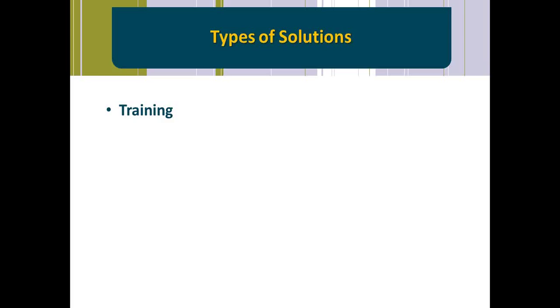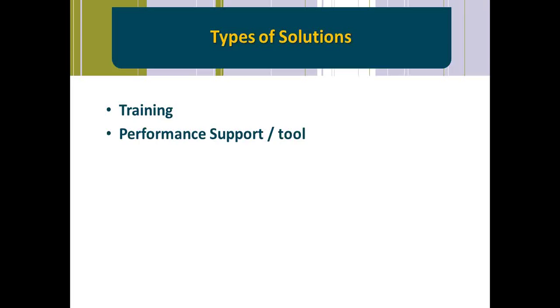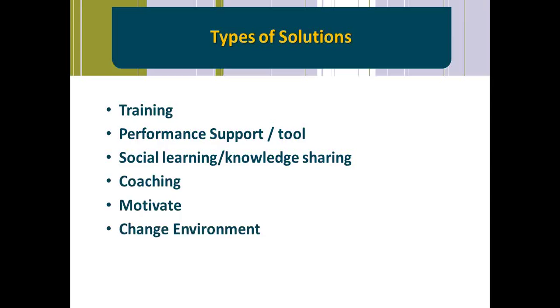What could the solutions be? Obviously it could be training — online training, classroom training, mobile learning, social learning. Maybe it's simply a matter of performance support. Maybe they need different tools. Maybe it's social learning, knowledge sharing, or coaching. Maybe they need to be better motivated, or you change the environment, or change the organization. Change the succession planning or change the development planning — maybe they are not going down the path to develop the skills they need. That can include a bunch of different things from this list.